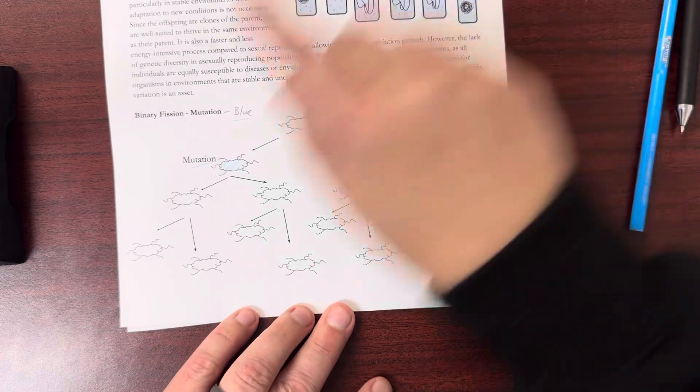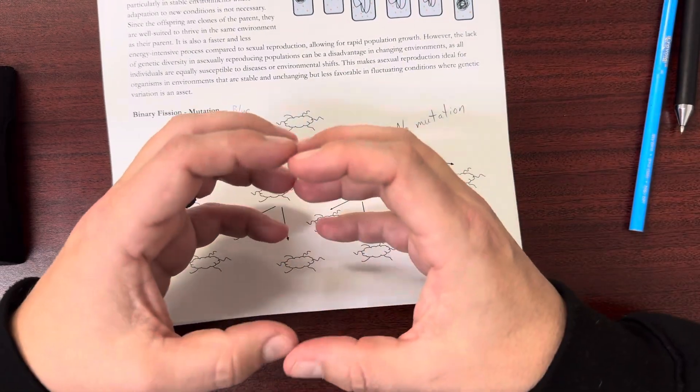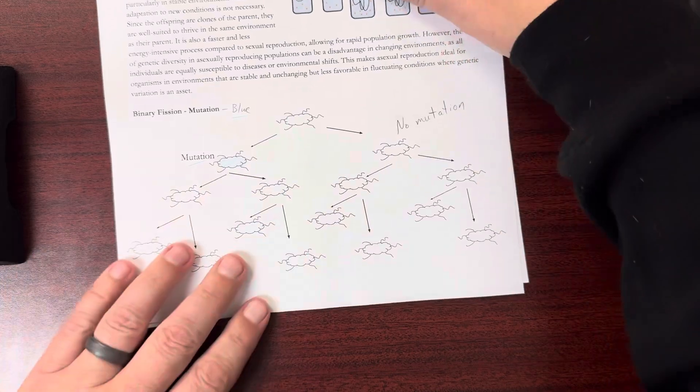Now, that's for binary fission. When they just, one cell splits apart and becomes two identical cells.